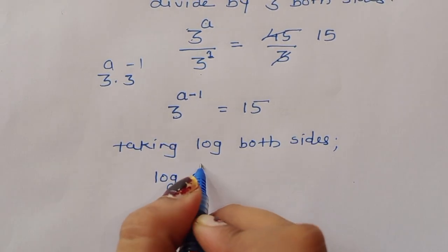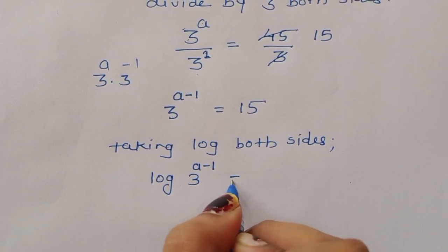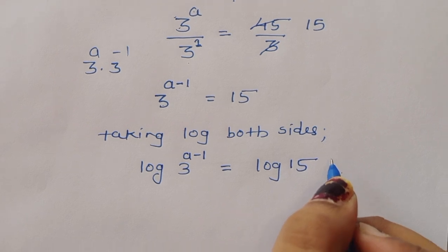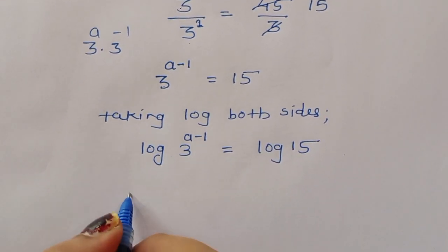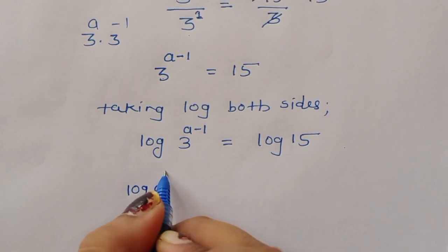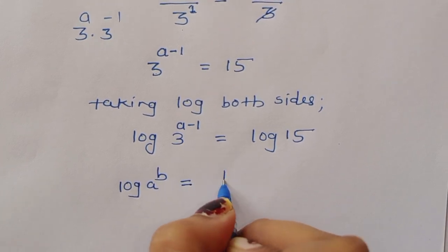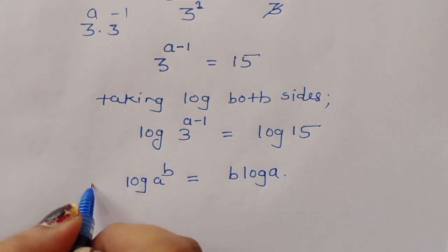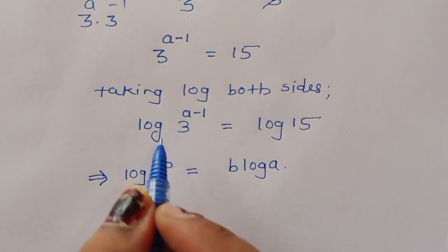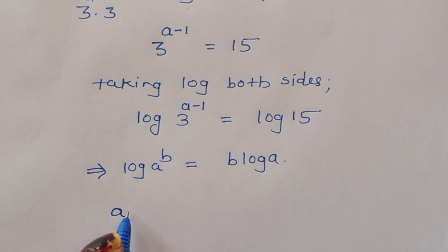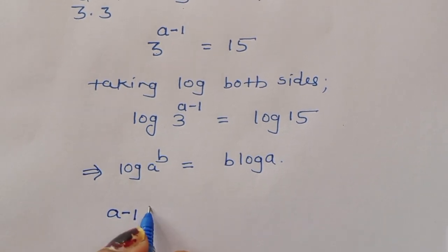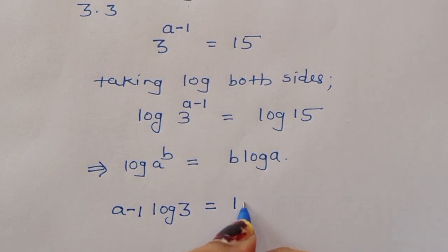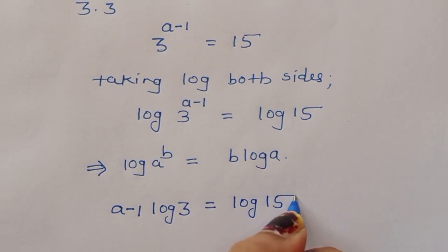Log of 3 power (a minus 1) is equal to log of 15. We know the formula: log of a power b is equal to b times log of a. Using this formula, we can write a minus 1 times log of 3 is equal to log of 15.